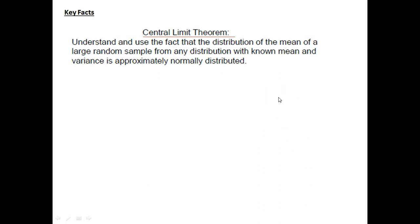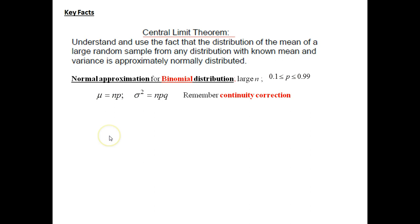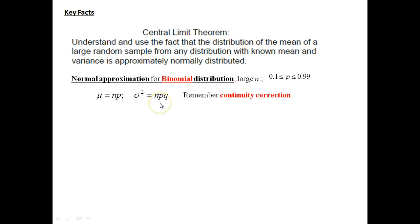We need to use the central limit theorem. In some cases, we'd be using the fact that the distribution of the mean of a large random sample from any distribution with known mean and variance is approximately normally distributed. So if we are using a normal approximation for a binomial distribution, we'd have a large n and probability p between 0.1 and 0.99. Our mean is NP and our variance is NPQ, and we're going to be using a continuity correction because the binomial is a discrete random variable and the normal is a continuous random variable.